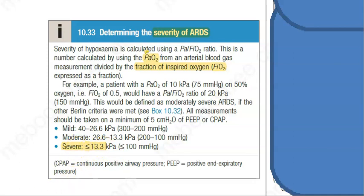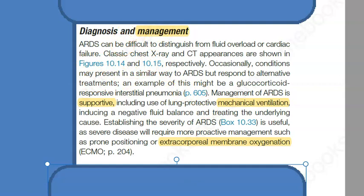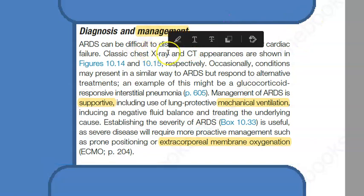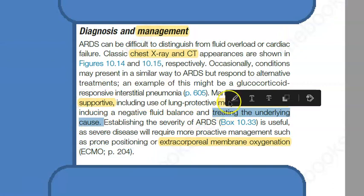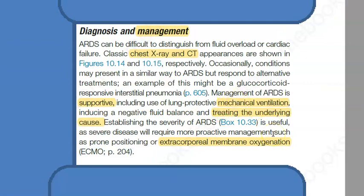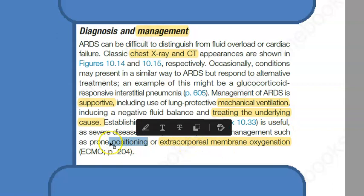Now let's look at the management of ARDS. Diagnosis: take a chest X-ray and CT scan, as we already saw. Management is supportive — give mechanical ventilation. There are other types of ventilation as well. You maintain negative fluid balance and, importantly, treat the underlying cause: if it's infective, treat the infection. You can also place the patient in the prone position — very much like what was done in COVID.